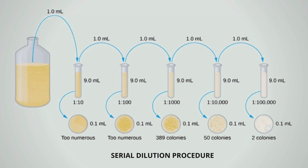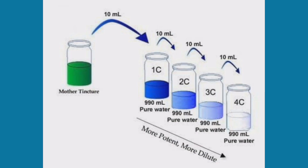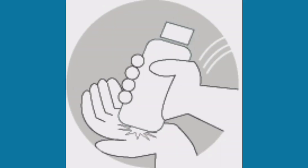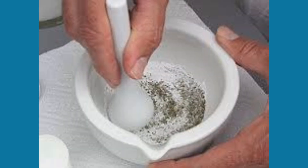Serial dilution is used outside our department by microbiology to study microorganisms in a small, specified way. They believe that by doing this process you can reduce the number of microorganisms so you can focus on very few of them, making it easier to study. Coming to our system, we undergo serial dilution in a different process — by trituration and succession.